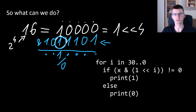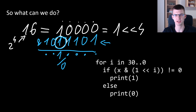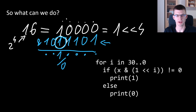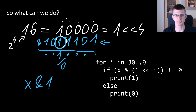Remember that we usually write binary with the most significant bit first, which is why we iterate from high i to low. At i = 0, checking x & 1 gives you the parity of x, equivalent to x modulo 2.